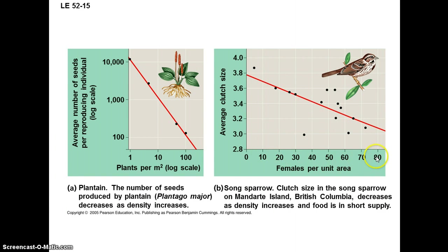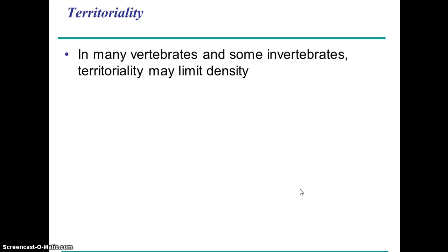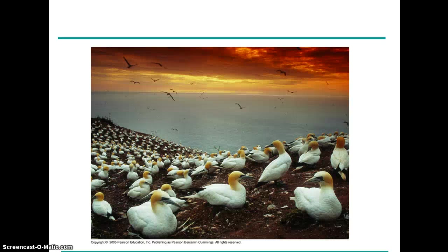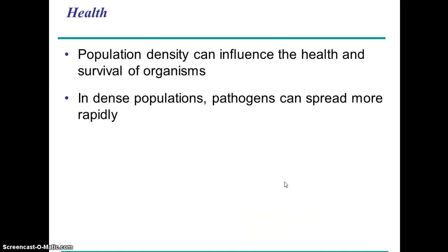Here you can see as the population of this bird species increases, the females tend to have fewer eggs, presumably because food is somewhat limited and she's not able to lay as many eggs as opposed to a lower density population. Territoriality is another factor — many species are territorial and have a fixed territory size, which can limit the population size. This cheetah is marking its territory, and these marine birds nesting on the shore have their little nest territory, which can limit the size of the population.